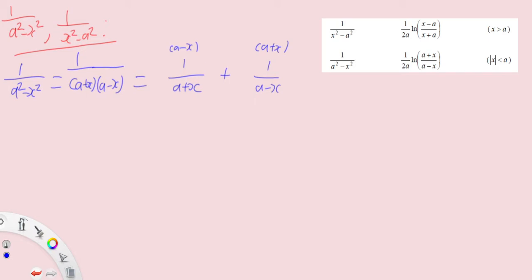So what do I get at the end? a minus x plus a plus x would give me back 2a. As such I have to multiply by 1 over 2a. And therefore we will get back 1 over a square minus x square and this will be the expression.